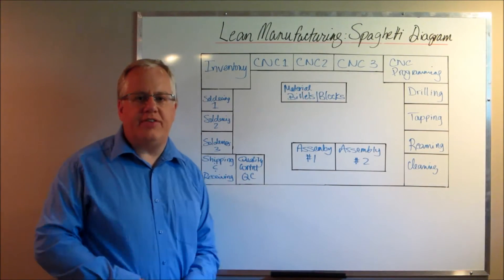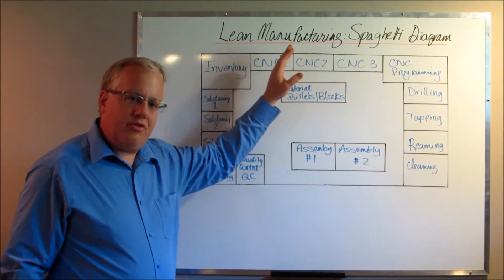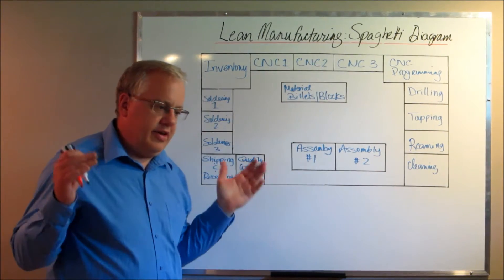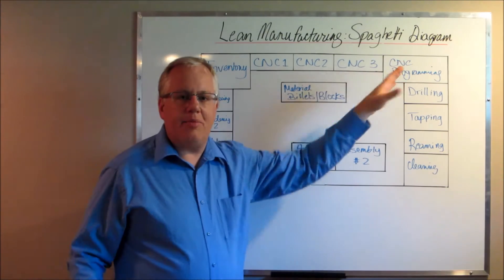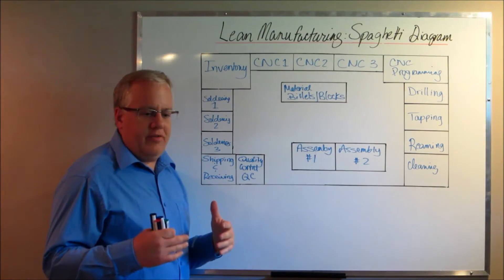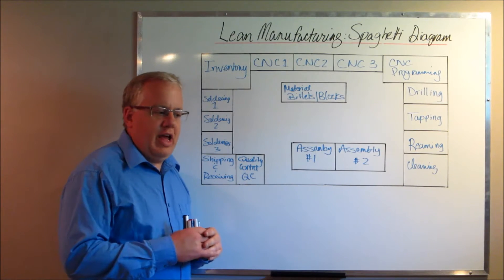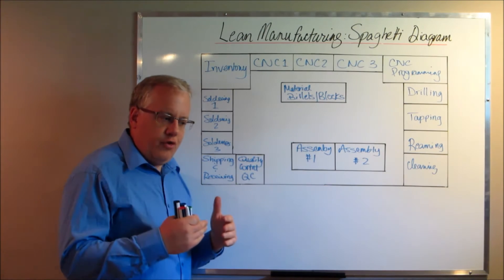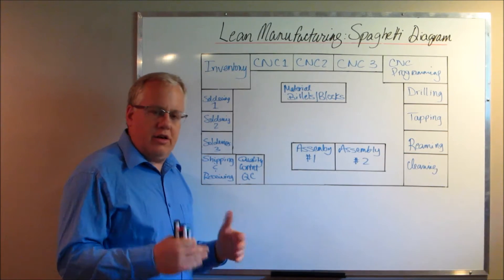Hi guys, Ian Johnson from Driversuccess.com. Today we're going to talk about a very simple and straightforward lean manufacturing tool, or a very simple Six Sigma tool. We're talking about spaghetti diagrams. This is basically part of the business process mapping doctrine, and it's the perfect tool for any manufacturer that wants to declutter their shop floor.